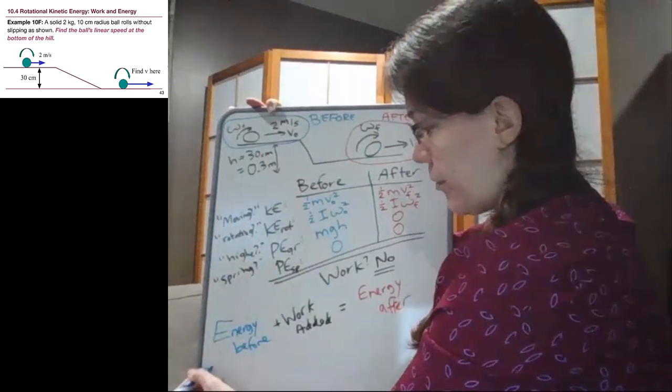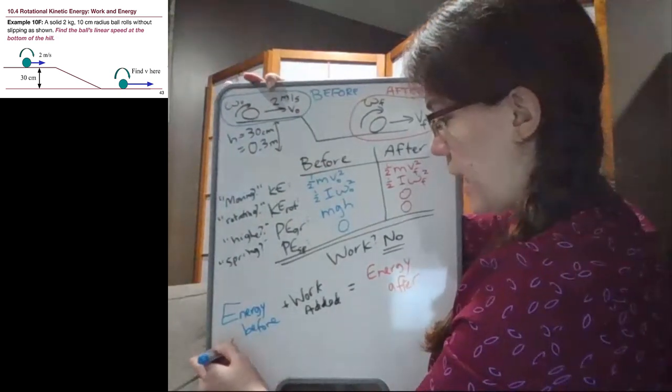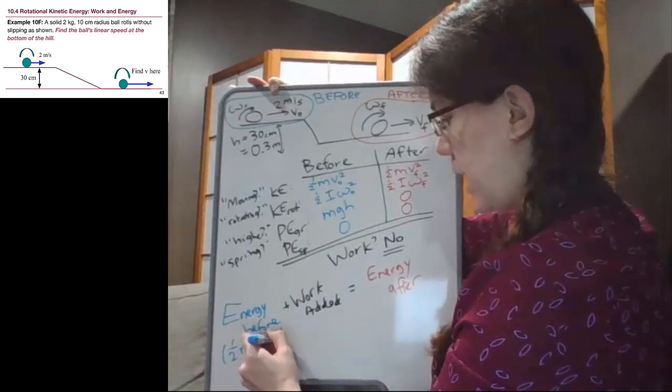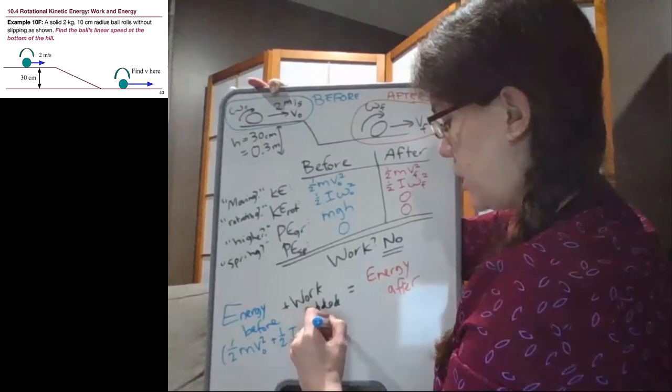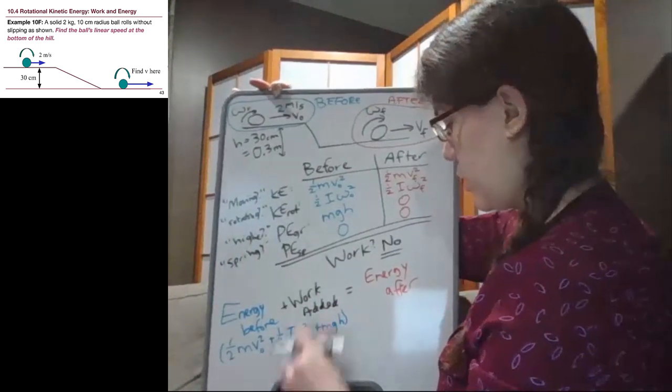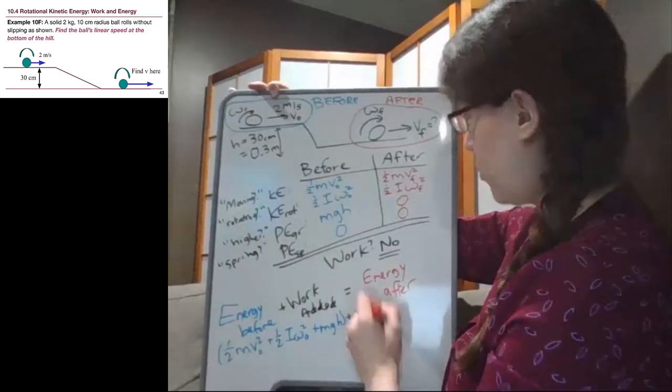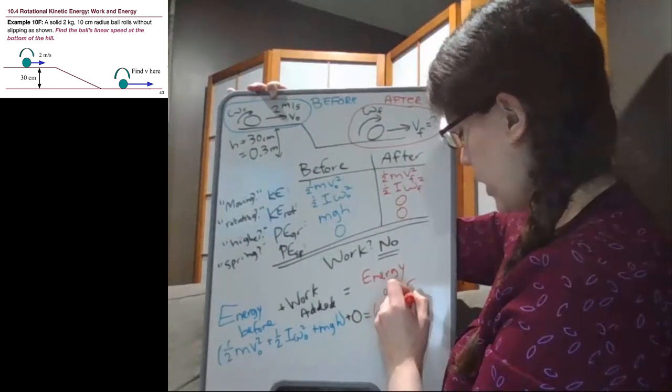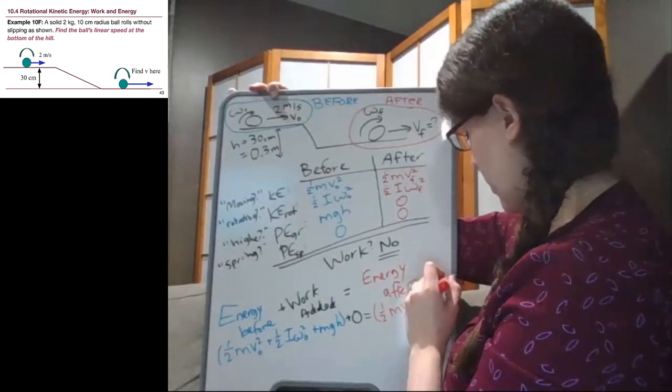Now we can plug in the terms that we have. In the before column we have three different terms: one half mv initial squared plus one half i omega initial squared plus mgh. For the work, we'll just put plus zero. And for energy after, we have one half mv final squared plus one half i omega final squared.